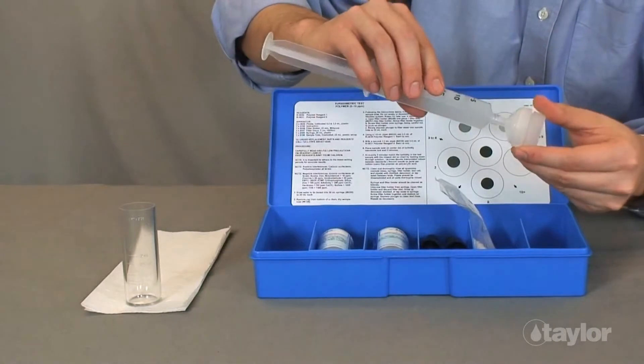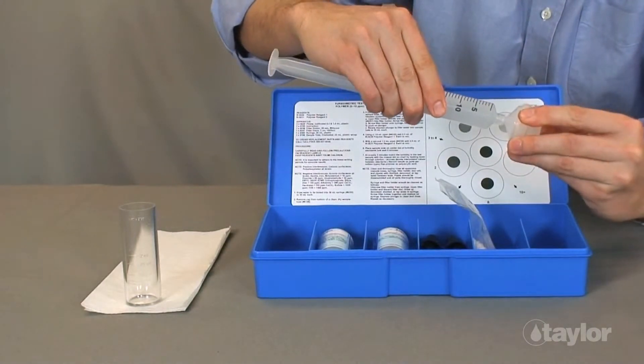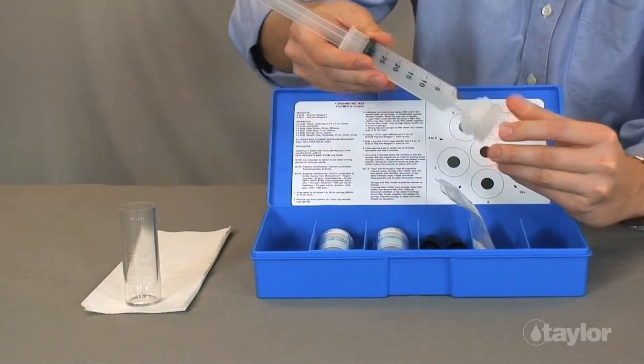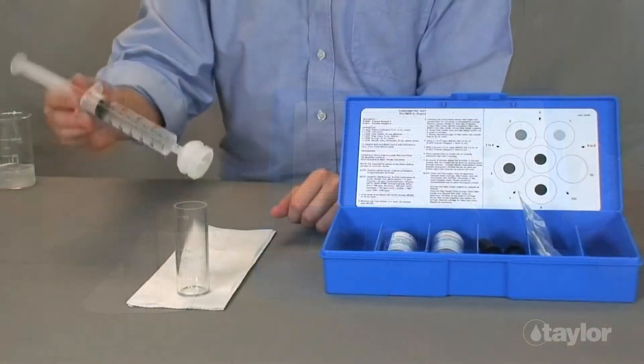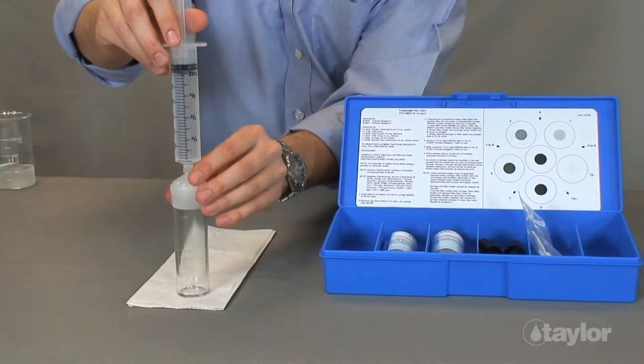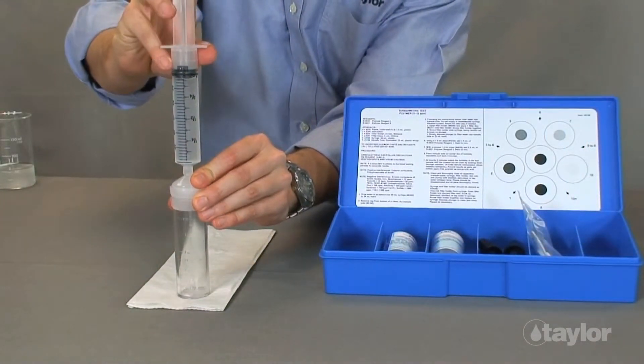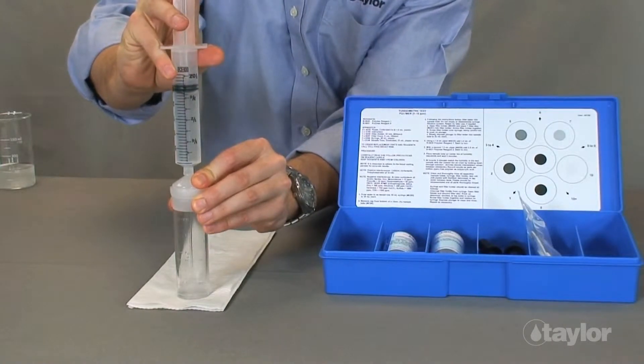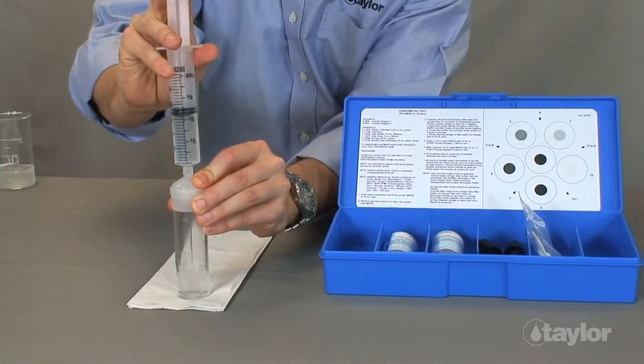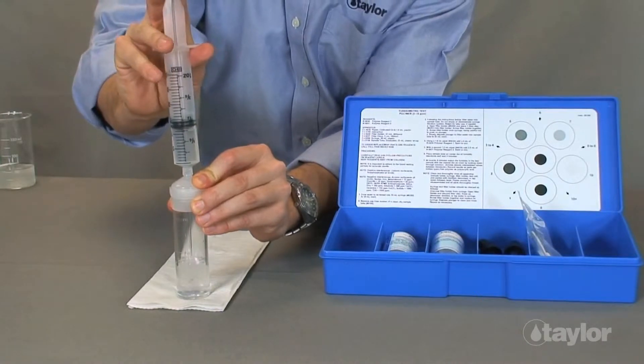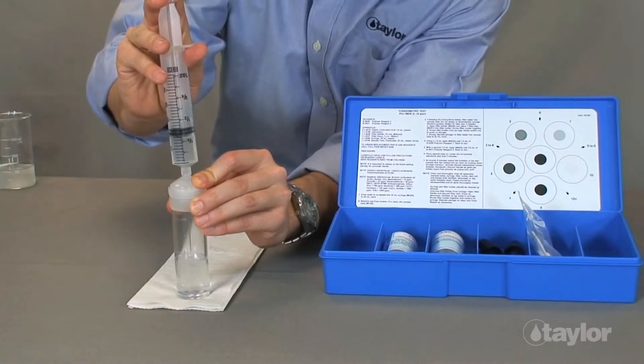Attach the prepared filter holder. As you screw the filter holder into the syringe, be careful not to push the plunger prematurely. When the syringe filtration system is assembled, you are ready to begin dispensing. Slowly depress the plunger to expel filtered water into the water sample tube. Fill the sample tube to the 25 milliliter mark.